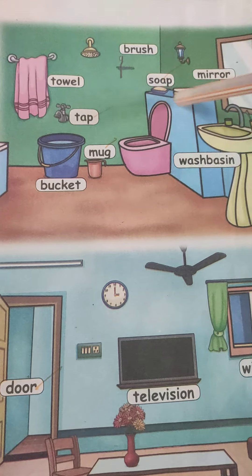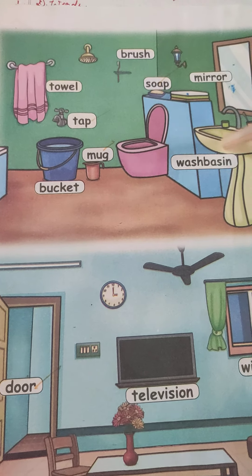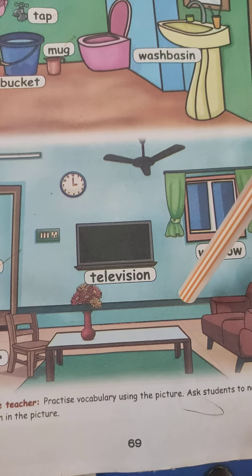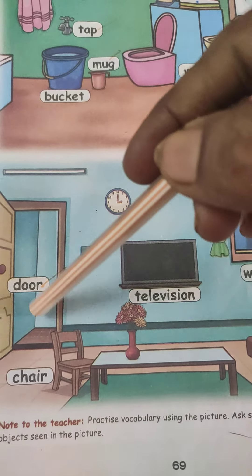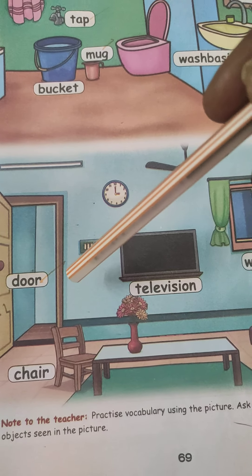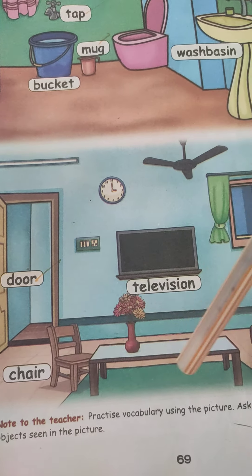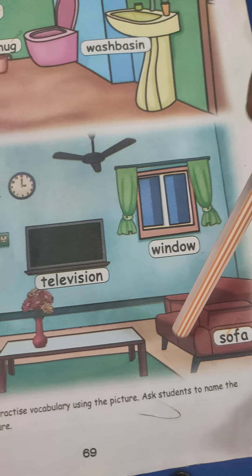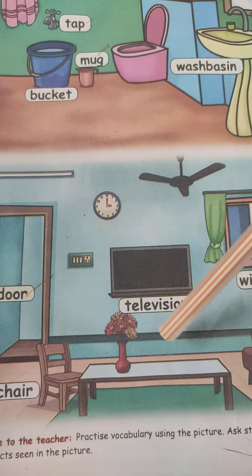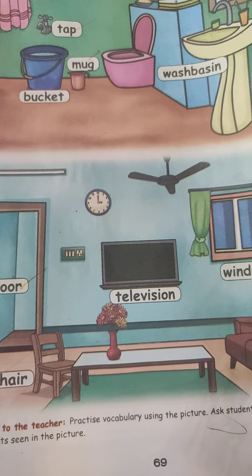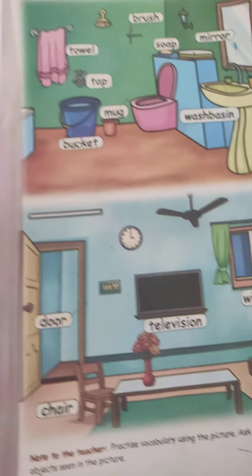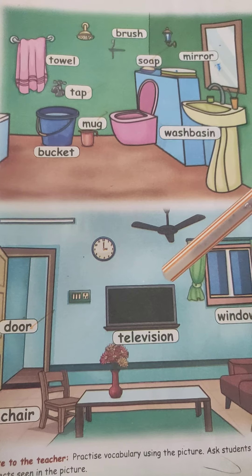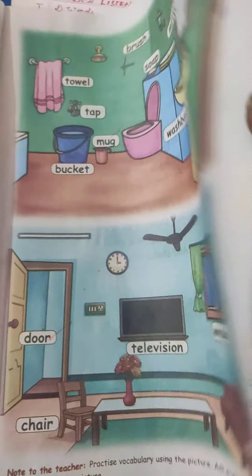The room is which room? The bathroom. We can see these things in the bathroom. Next one is a hall. In the hall you can sit and watch the television. So in every house we are having bedroom, kitchen, bathroom and hall.